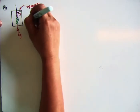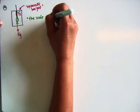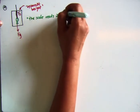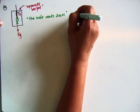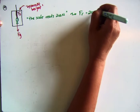The question says the scale reads 200 newtons. What they mean is F of the spring is equal to 200 newtons.